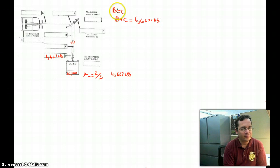We know that B plus C has to equal 6,667 pounds. Now it's just a matter of substitution. If B is equal to C, then in place of C, I can put another B. So B plus B equals 6,667 pounds, or 2B equals 6,667 pounds.